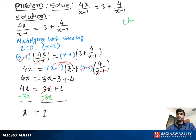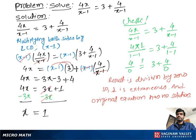Now to check this solution, we write the original equation once again. 4x over x minus 1 equal to 3 plus 4 over x minus 1. Now we substitute the x value. So we can write 4 times 1 over 1 minus 1 equal to 3 plus 4 over 1 minus 1. And 4 times 1 is 4 over 0, 3 plus 4 over 0. As you see, the result is division by 0, so 1 is extraneous and the original equation has no solution.